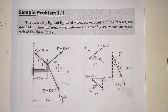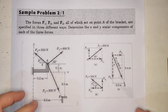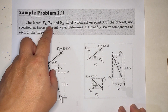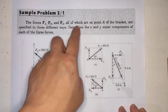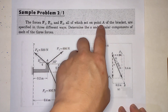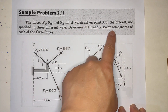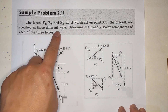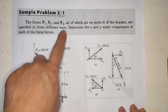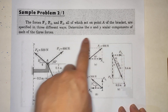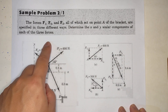Hello, so let's answer sample problem 2/1. The forces F1, F2, and F3, all of which act on point A of the bracket, are specified in three different ways. Determine the X and Y scalar components of each of the three forces.